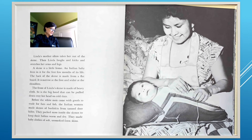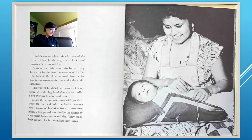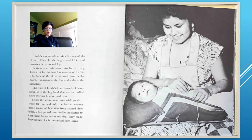Linda's mother often takes her out of the skein. Then Linda laughs and kicks and stretches her arms and legs. A skein is a little home. An Indian baby lives in it for the first few months of its life. The back of the skein is made from a flat board, narrow at the foot and wider at the shoulders. The front is made of heavy cloth, as is the big hood that can be pulled down over her head on cold days. And there she is smiling.